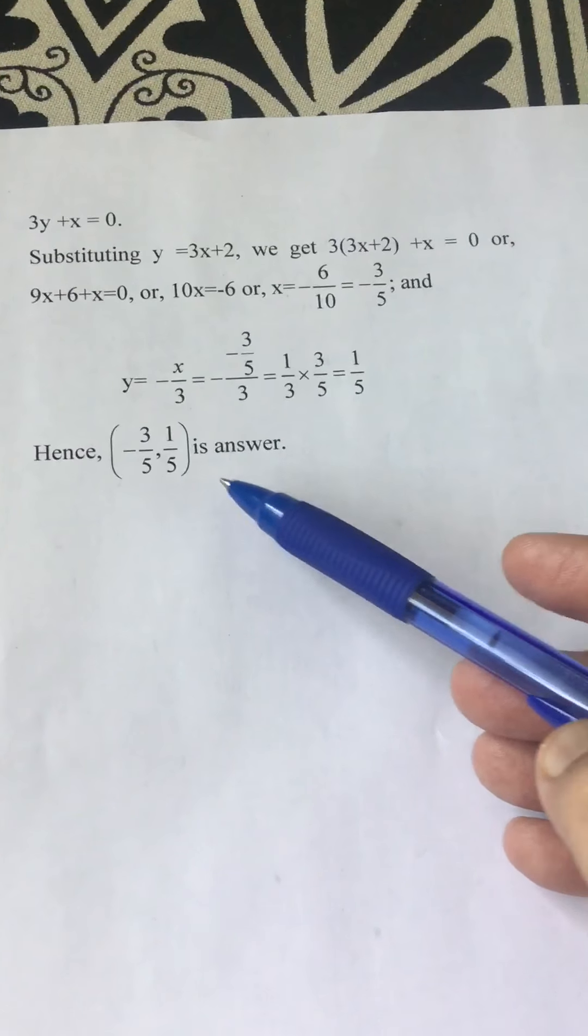See, this line is y = 3x + 2 and this line is 3y + x = 0. The intersection of these two lines is this point, and this shows the minimum distance from this point to the origin.